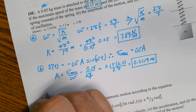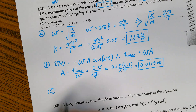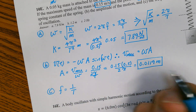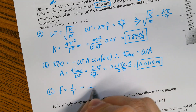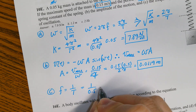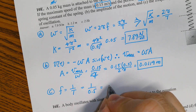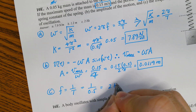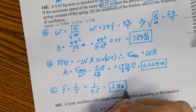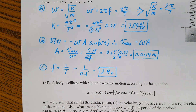For Part C, frequency is just 1 over the period, so 1 over 0.5 equals 2 hertz.